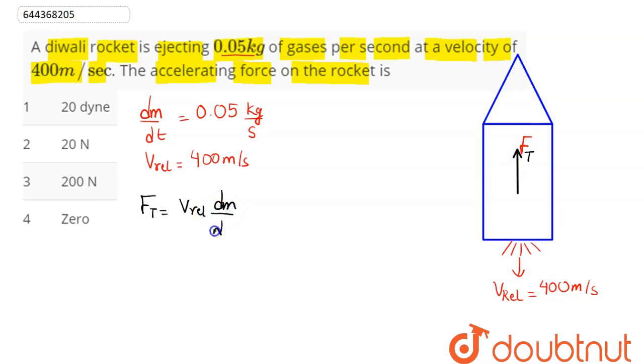Now v_relative value is given as 400 meter per second and dm/dt as 0.05 kg per second. So this here comes to be 400 into 0.05 kg.